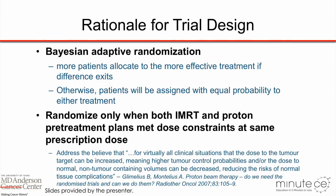The rationale for the trial design is that we chose a Bayesian adaptive randomization to allow more patients to be allocated to the more effective treatment if a difference exists between the arms. Otherwise, patients would be assigned with equal probability to either treatment. We also chose to randomize only those patients who had both IMRT and proton plans that met the dose constraints at the same prescription dose before starting treatment.